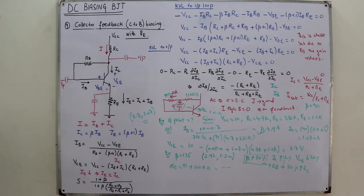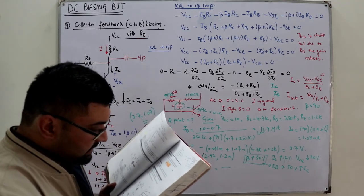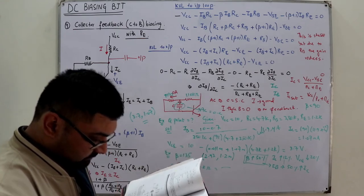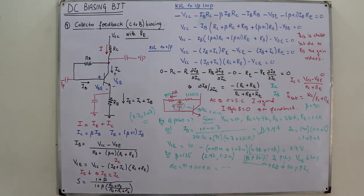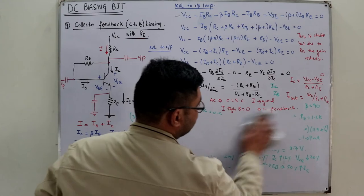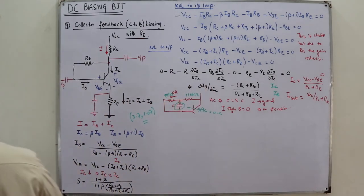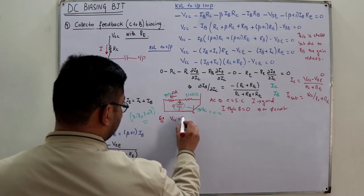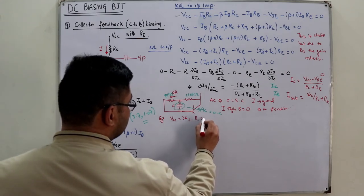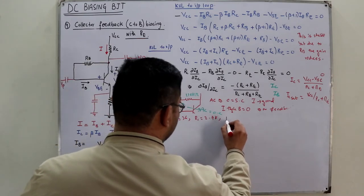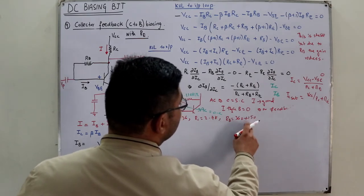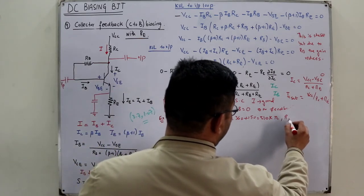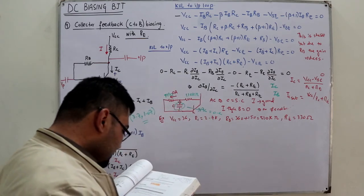Load line analysis example: Given VCC = 36 V, RC = 2.7 kΩ, RB = 360 kΩ + 150 kΩ = 510 kΩ, RE = 330 Ω. Draw the load line and determine DC beta. For the IC-axis intercept, set VCE = 0: IC(sat) = VCC / (RC + RE) = 36 / (2.7k + 0.33k) ≈ 11.8 mA. For the VCE-axis intercept, set IC = 0: VCE = VCC = 36 V.